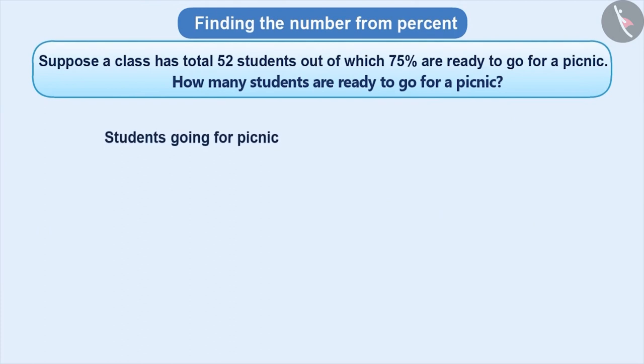To find the number of students going for a picnic, we need to find 75% of total 52 students. That means, we have to find the product of 75% into 52.